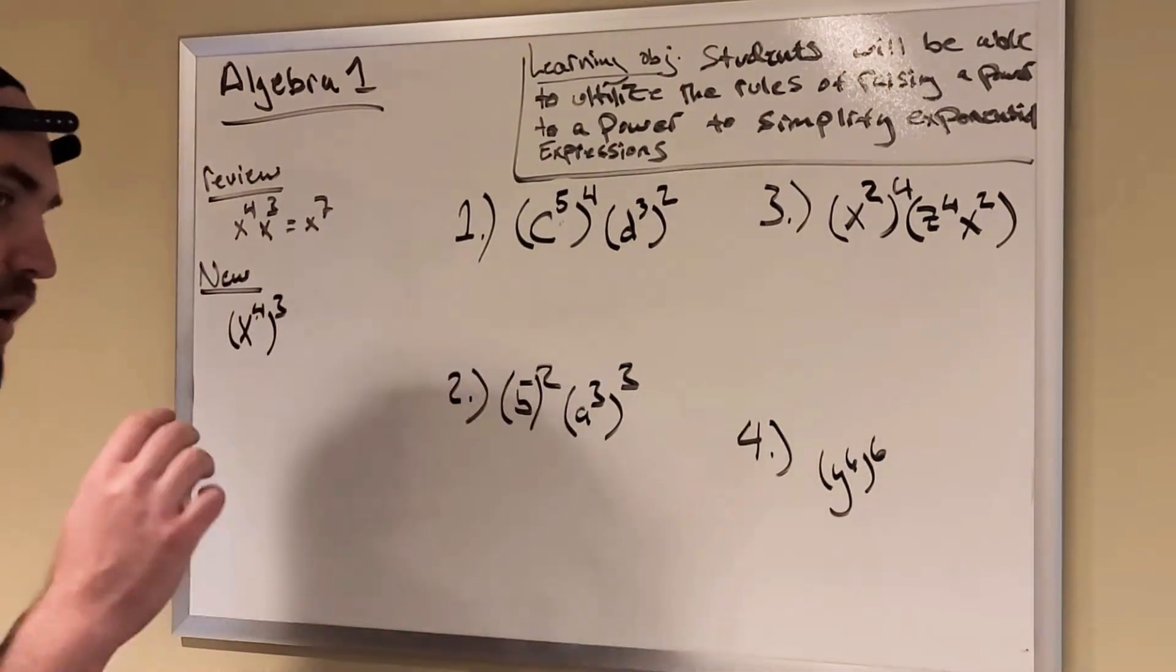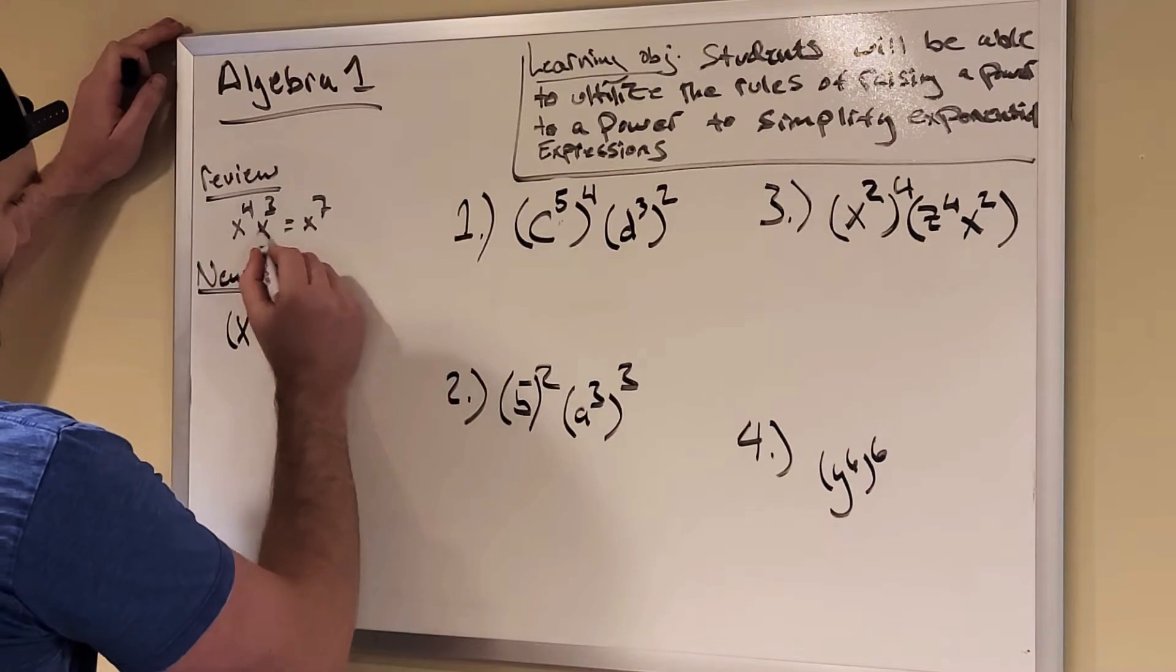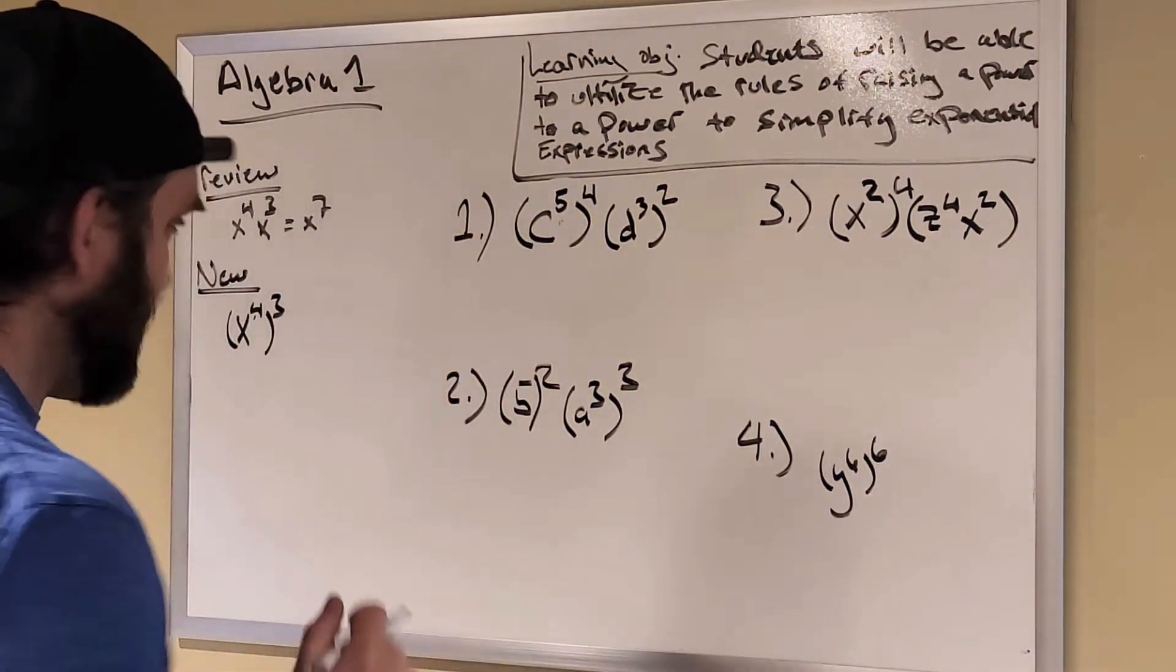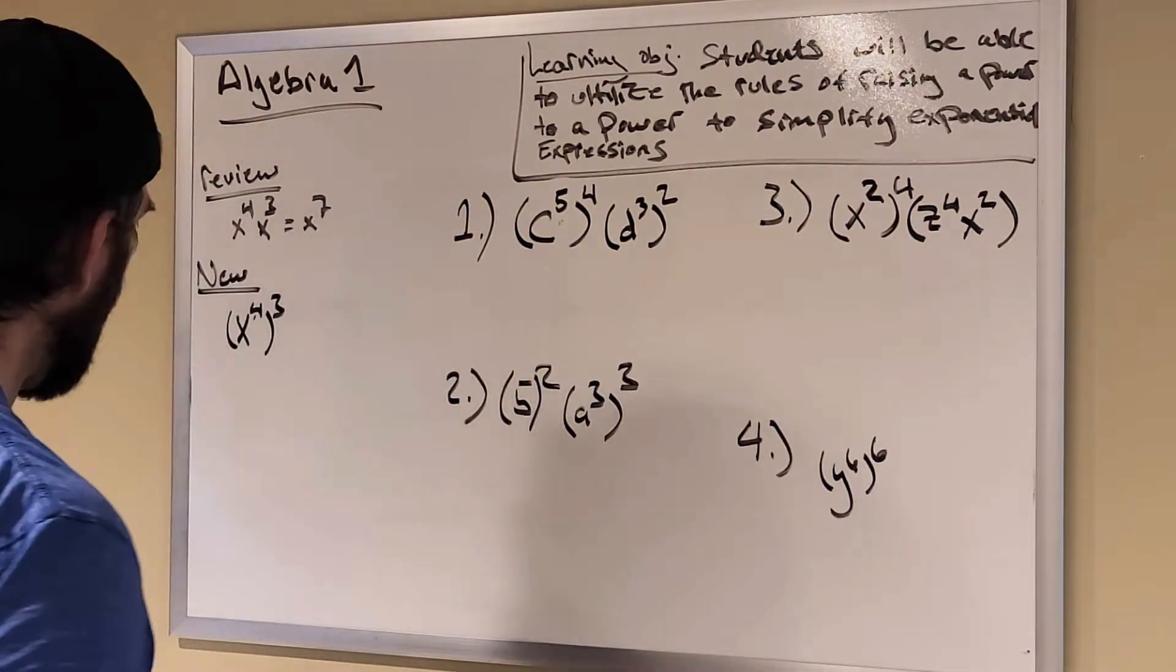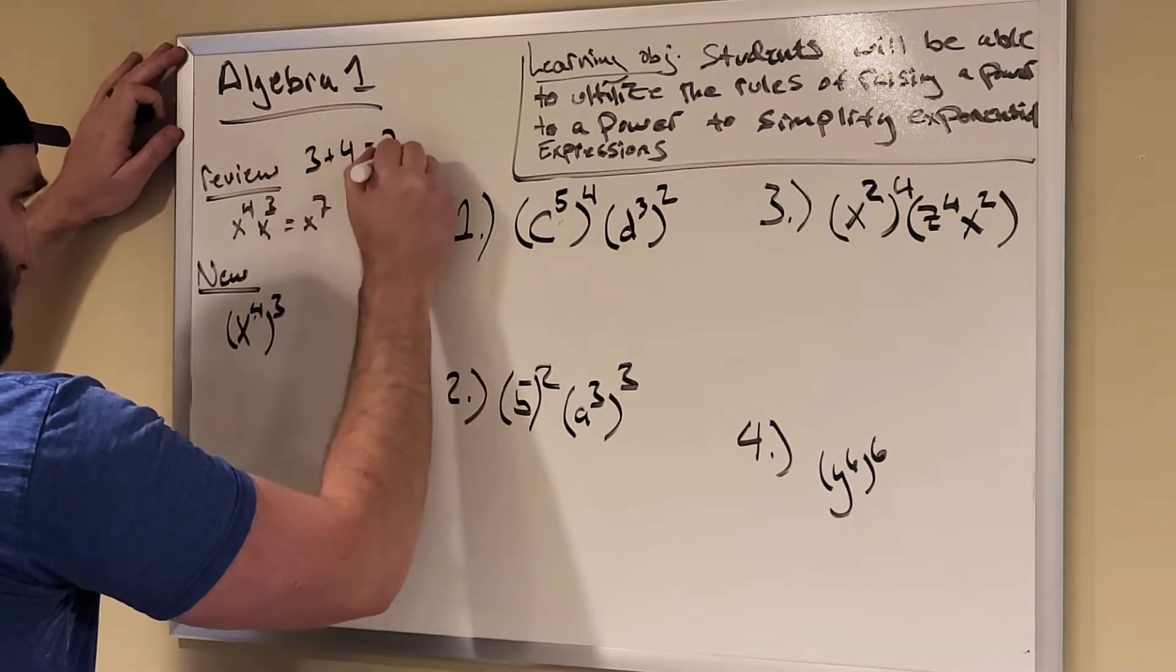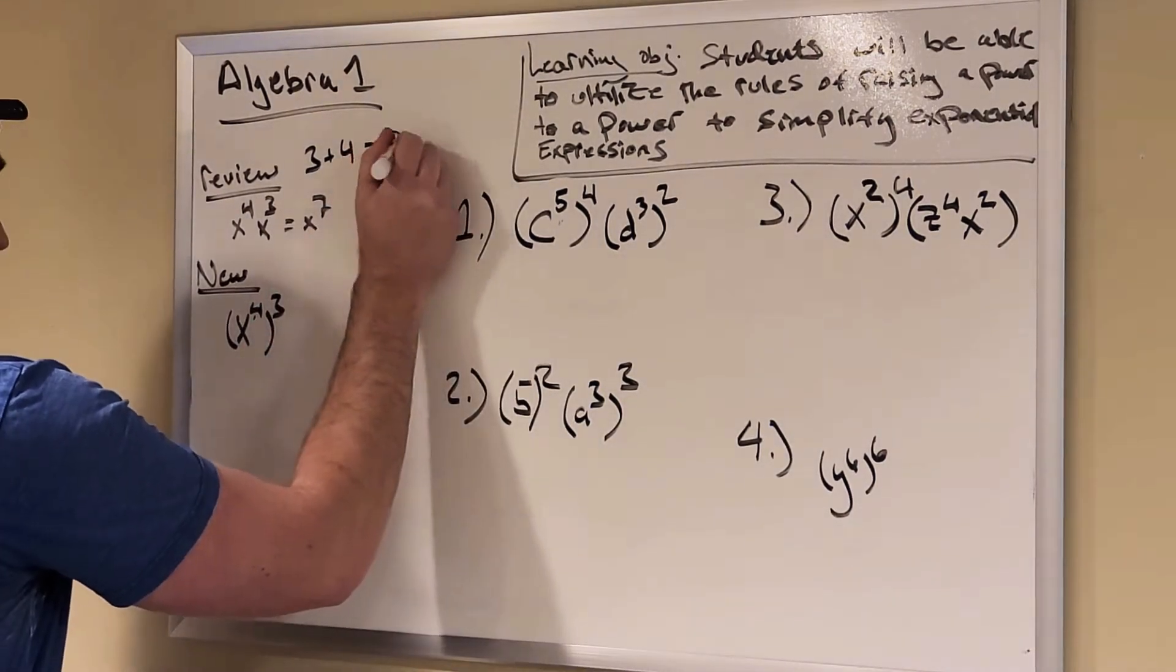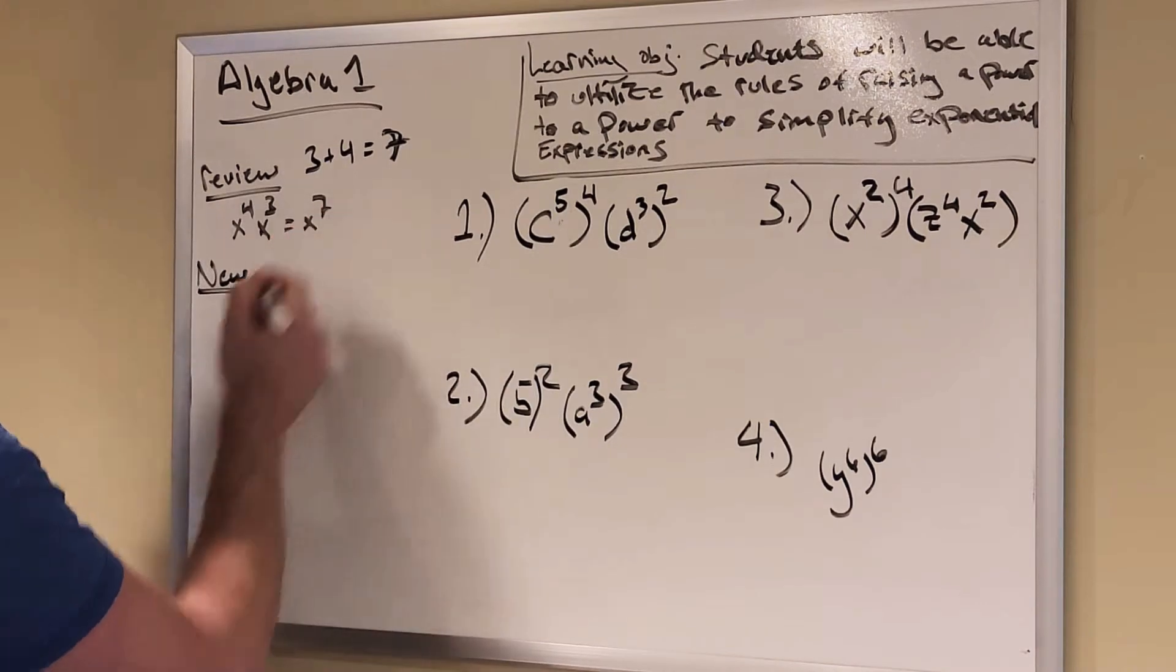All right, let's review what we went over last time. Last time we talked about if I am multiplying two exponents here, x to the fourth times x to the third, what I want to do is I want to add the exponents. So it's three plus four, or four plus three, and that gives me seven. All right, so the answer to this one is x to the seventh.